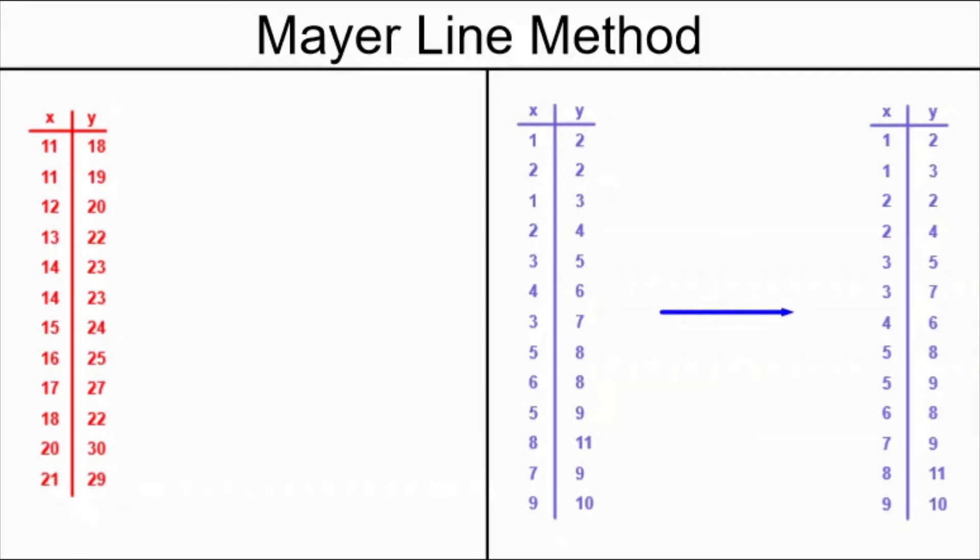So what you have to do is reorder all of the points in the table of values with the x values increasing and you keep the y values with their x values. You keep the points intact. It is crucial that you are careful to pay attention to this step when doing the Mayer Line method.